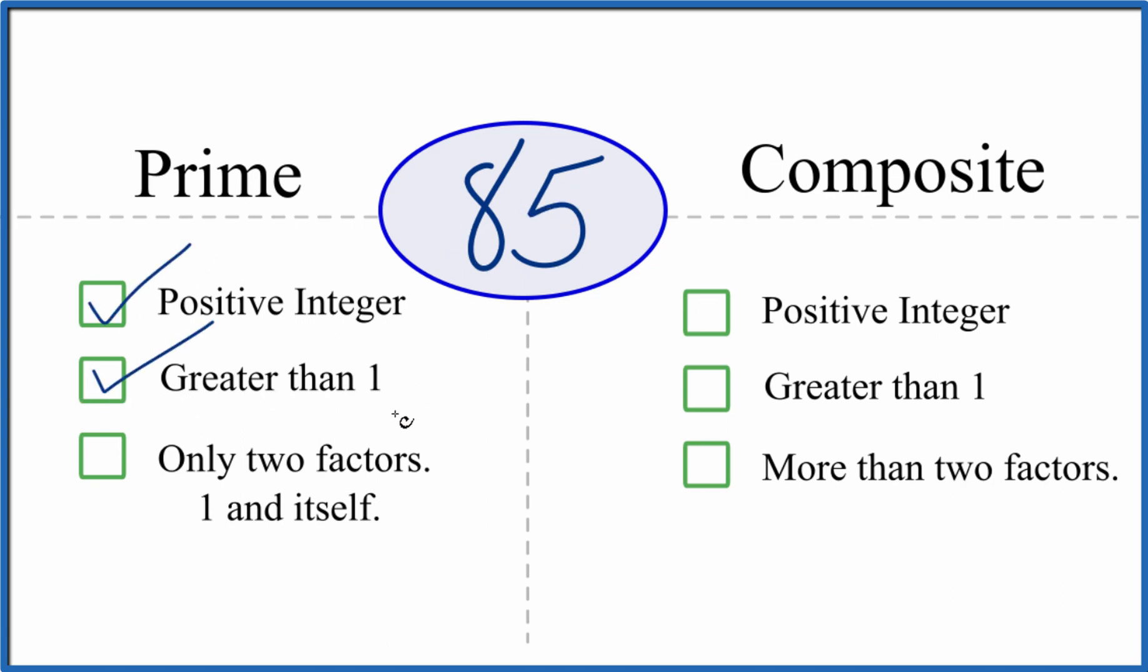Are there only two factors, 1 and itself? So 1 and 85. 1 times 85 equals 85. But are there other factors other than 1 and 85? Looks like 5 would go into 85 evenly. In fact, 5 times 17 equals 85. So there are more than two factors here.